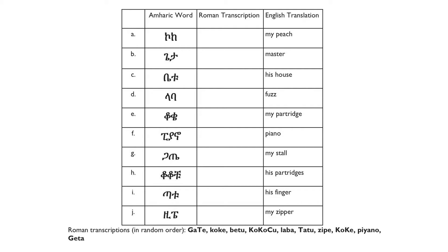I also noticed that in each row of the table, there are two repetitive scripts. And in the transcriptions, the word KOKOQ — with big K and big C — also has two repetitive syllables. Therefore, we have our first answer: H is KOKOQ with big K and big C.